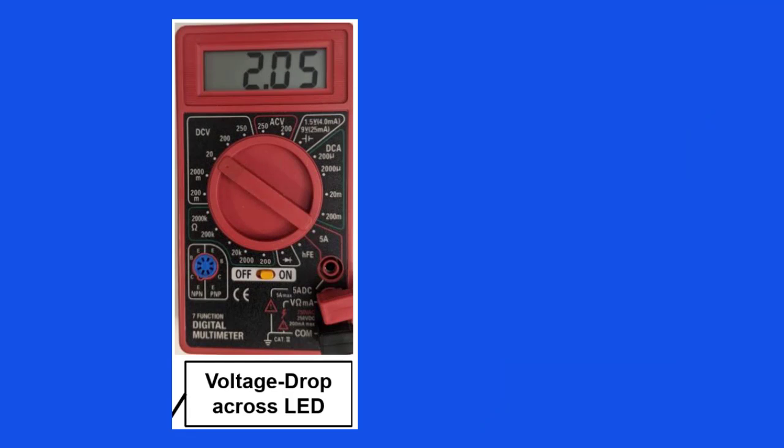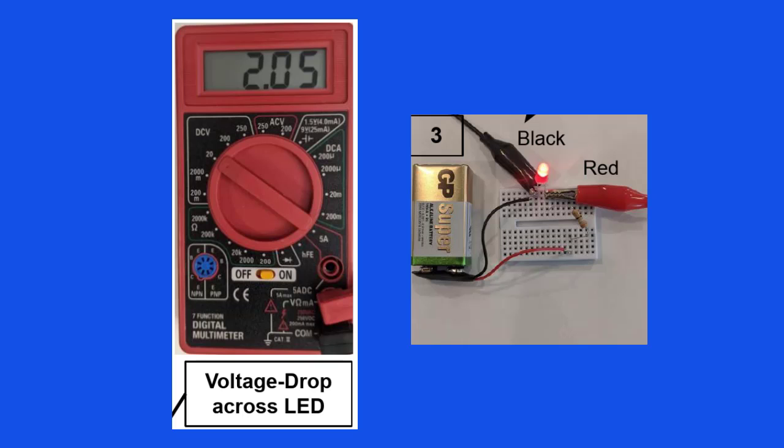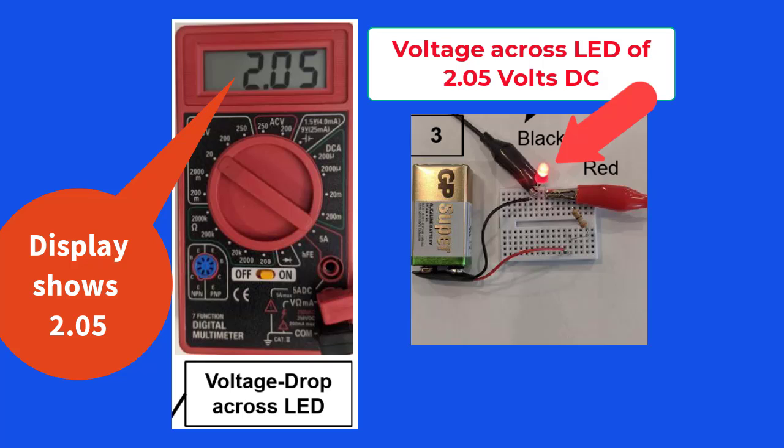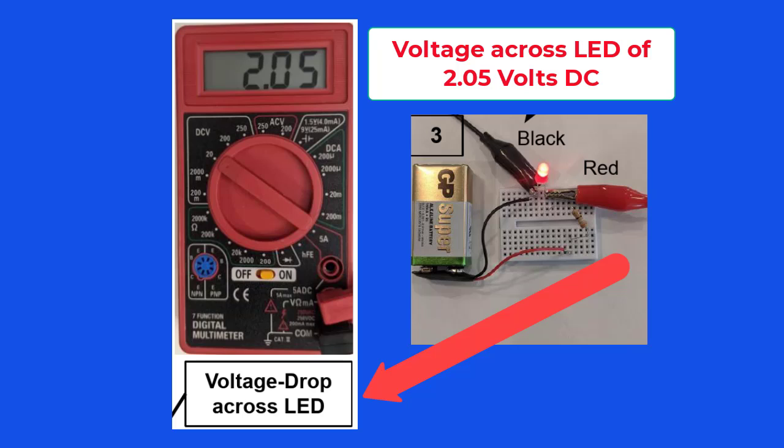Next, we are going to measure the voltage across the LED. How many volts does it measure in our example? The display shows 2.05, which means there is a voltage across the LED of 2.05 volts DC. At this point, I want you to remember what we discussed in Lesson 17. We refer to this voltage across the LED as the voltage drop across the LED.